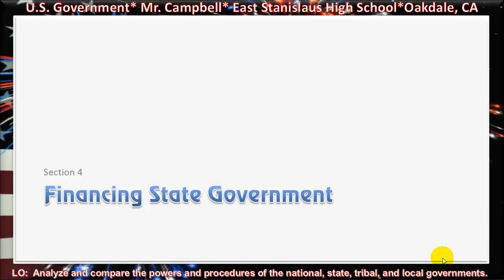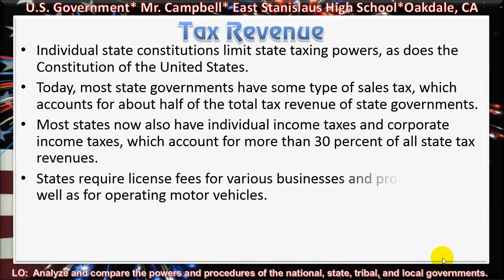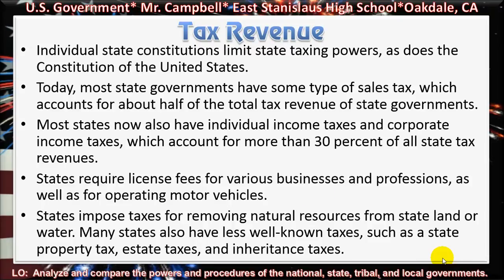Section 4, Financing State Government — Tax Revenue. Individual state constitutions limit state taxing powers, as does the Constitution of the United States. Today, most state governments have some type of sales tax, which accounts for about half of the total tax revenue of state governments. Most states now also have individual income taxes and corporate income taxes, which account for more than 30% of all state tax revenues. There are some states that don't have sales tax, and there are some states that don't have income tax.